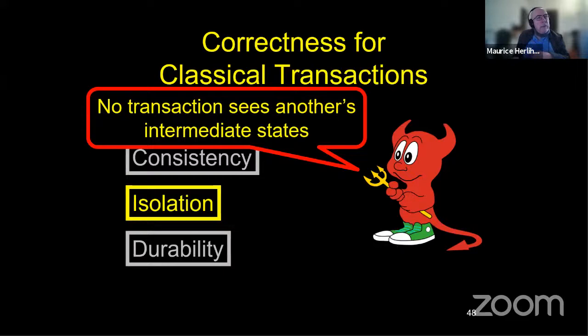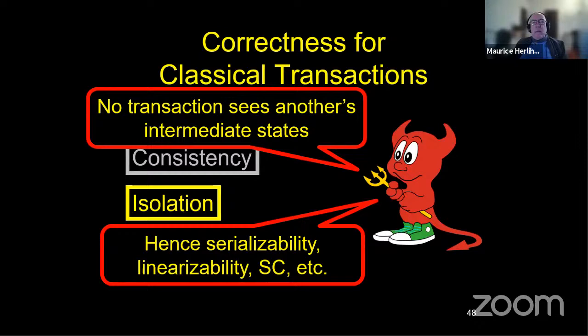The next property in the ACID trilogy is isolation. So isolation says that no transaction sees another transaction's intermediate states. And this is important because it says in some sense that if you have, it's related to consistency in the sense that if every transaction preserves some invariant, then no transaction will ever see that invariant temporarily violated by another transaction because you either see the world before the transaction or the world after the transaction. And from this sort of informally stated, we get all kinds of familiar consistency properties like serializability, linearizability, snapshot consistency, and so on. There's a huge amount of database literature on different kinds of isolation mechanisms. Some of which are stronger than others. Some of which are easier to implement than others.